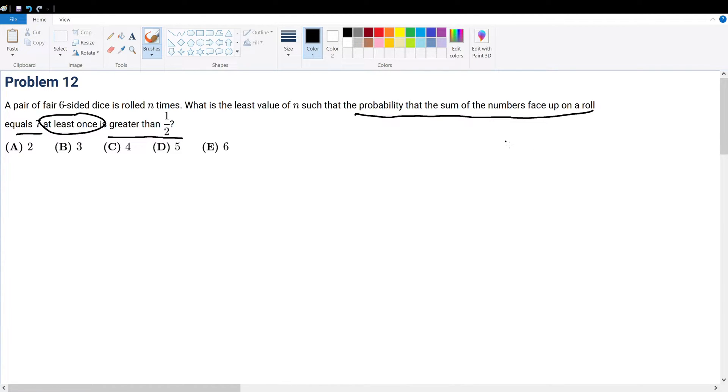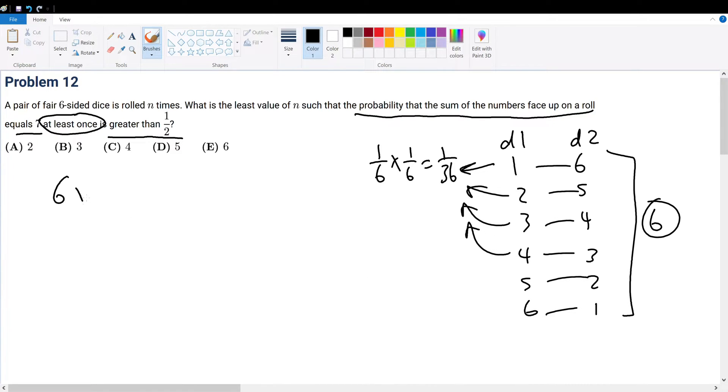First, the probability that the sum equals 7. For die 1 and die 2, the possible combinations are: 1-6, 2-5, 3-4, 4-3, 5-2, 6-1. That's six cases total out of 36 possible arrangements. For each arrangement, the probability is 1/6 × 1/6 = 1/36. So six cases each with probability 1/36 gives 1/6 as the probability that the sum equals 7.